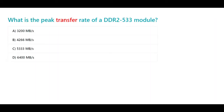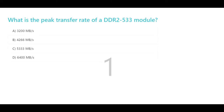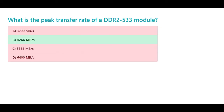What is the peak transfer rate of a DDR2-533 module? A. 3200 MB/s. B. 4266 MB/s. C. 5333 MB/s. D. 6400 MB/s. The correct answer is B. 4266 MB/s.